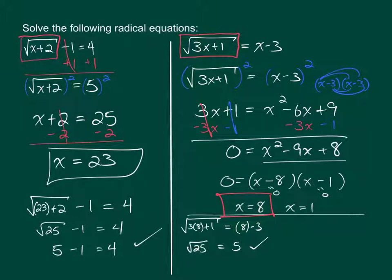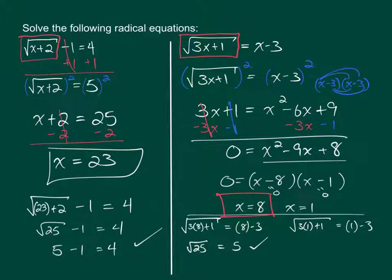For the other solution X equals 1, I'm going to substitute 1 in for X in the original equation. The square root of 3 times 1 plus 1 equals 1 minus 3. Inside the square root: 3 times 1 is 3, plus 1 is 4 — so this is the square root of 4. And 1 minus 3 is negative 2. But the square root of 4 is positive 2 — this is false. So I'm going to cross out X equals 1. The only answer that works is X equals 8.